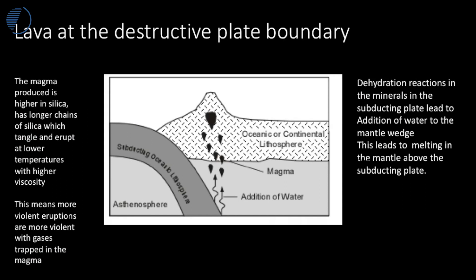At convergent or destructive oceanic-oceanic or oceanic-continental plate boundaries there are violent but often less frequent eruptions. This is because the subducting plate contains wet sediments which contain hydrous minerals — minerals which contain water — going down into the Earth's asthenosphere. As pressure and temperature increase going into the Earth's interior, water is driven out of these rocks and added to the area called the mantle wedge, where it leads to melting. The magma then rises and erupts through the lithosphere.